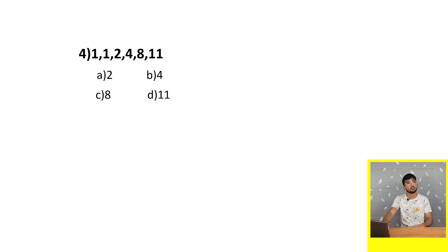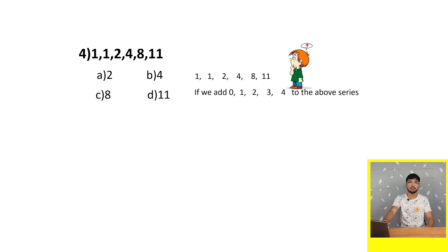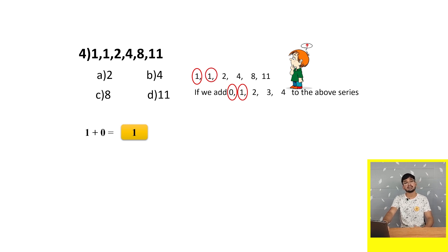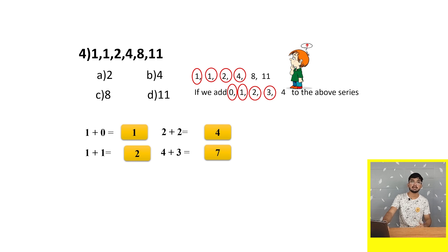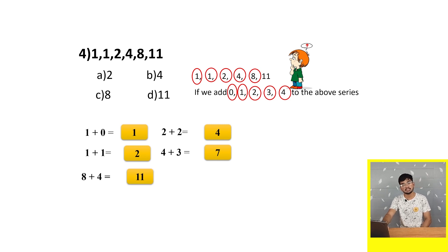Consider the fourth question: 1, 1, 2, 4, 8 and 11. We add 0, 1, 2, 3 and 4 to the series. 1+0=1, 1+1=2, 2+2=4, 4+3=7 — but the number given is 8, which is wrong. It must be 7. Then 7+4=11, which is correct. So the wrong number is 8, that is option C.